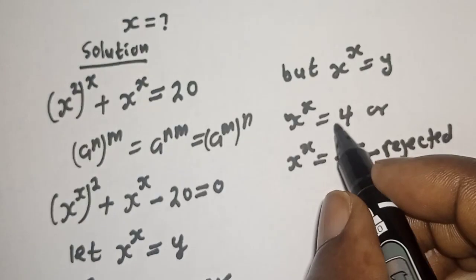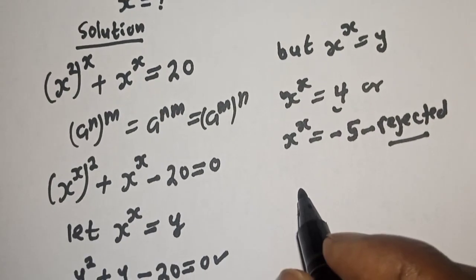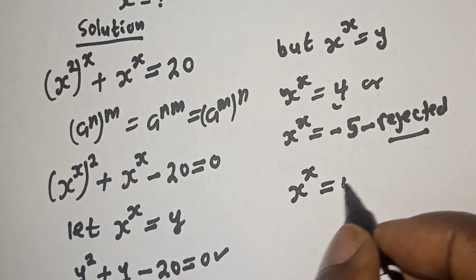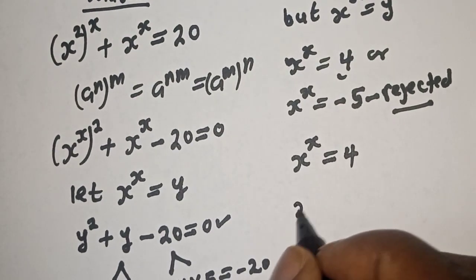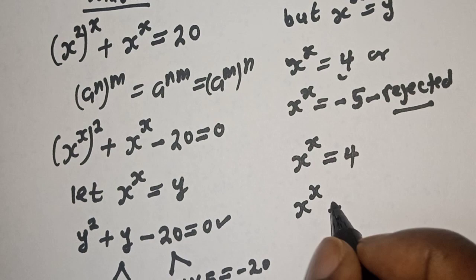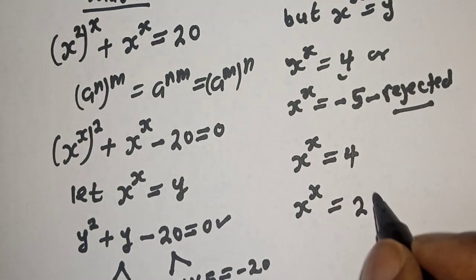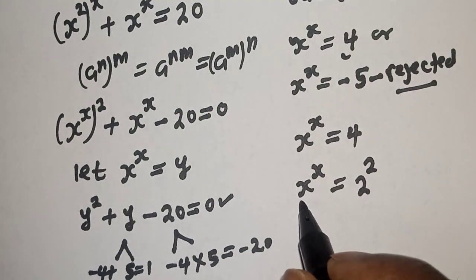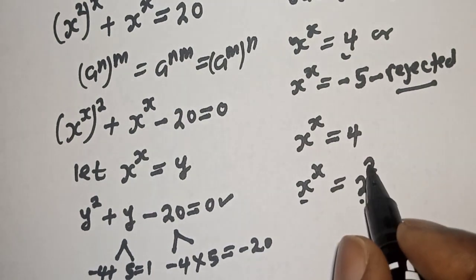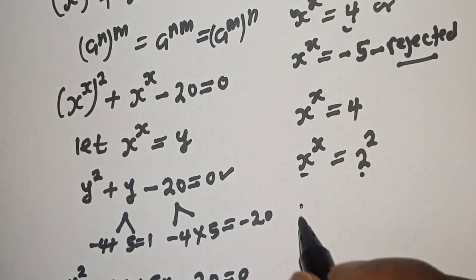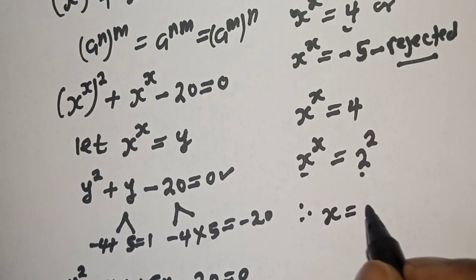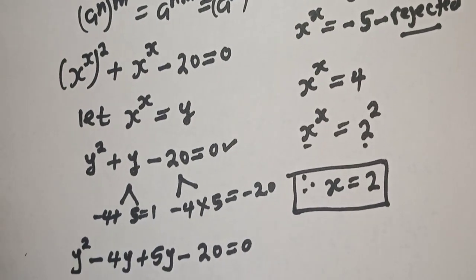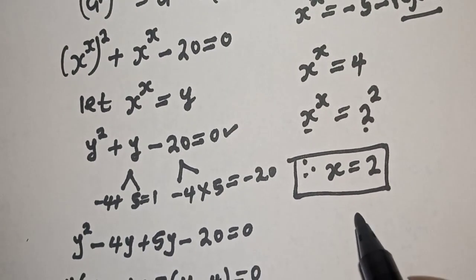The only valid solution is s raised to power s equals 4. This can be written as 2 squared, which is 2 raised to power 2. Since the base equals 2 and the exponent equals 2, therefore s equals 2. This is the final answer. We can check to confirm if our answer is correct.